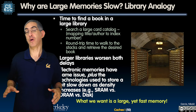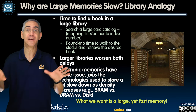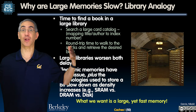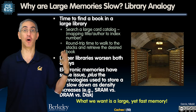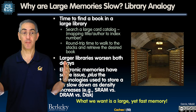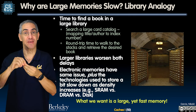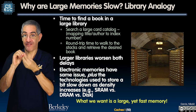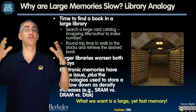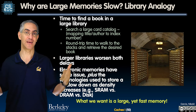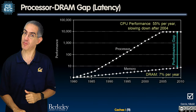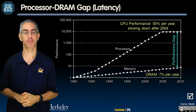What we want, in the ideal case, is a really large memory — as large as we can get — but as fast as the smallest element. That's the perfect goal: as fast as registers, but as big as infinity. That's really what we're looking for.